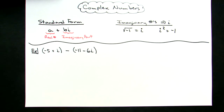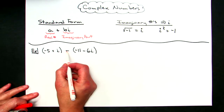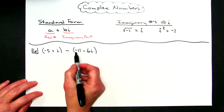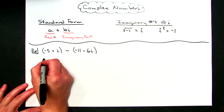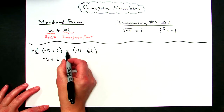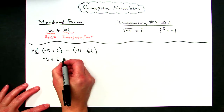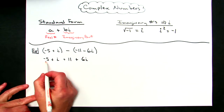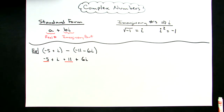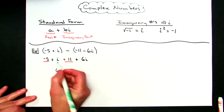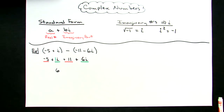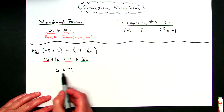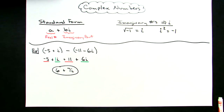You're going to go through and find some like terms. Because this is a minus sign, I'm going to distribute a negative 1 throughout the second quantity to drop the parentheses, which changes all the signs — making it plus 11 and plus 6i. Now finding like terms: negative 5 and 11 give me 6, and putting the i terms together, i plus 6i gives me 7i. So I've got standard form: 6 plus 7i, which is A plus Bi.